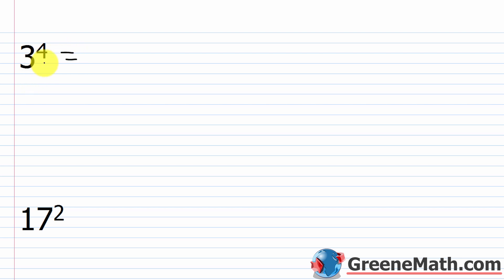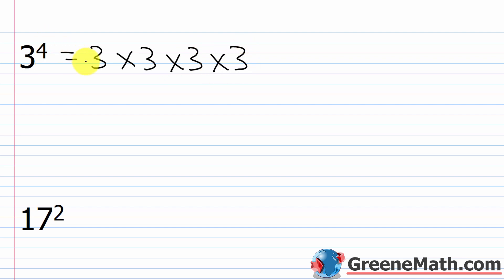What about 3 to the 4th power? We write it using multiplication and then compute. 3 to the 4th power is 3 times 3 times 3 times 3 — 4 factors of 3. So: 3×3=9, 9×3=27, 27×3=81. The answer is 81.